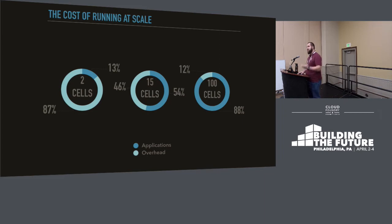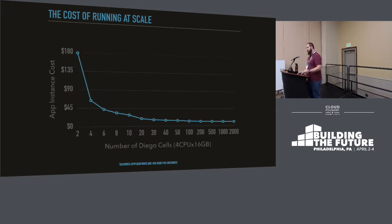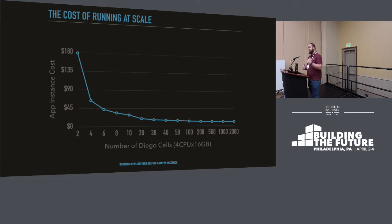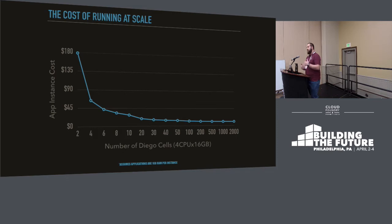So what does that look like in terms of cost per app — the compute cost? How much does it cost for that CPU, for that one gig of RAM? When you're at two cells, each app is at about $180 just in compute costs alone. But once you go from two to four, it doesn't drop by half — it drops by more than half. You get down to like $45, and the theoretical max is right about $11 in compute cost, because that's how much it costs to run a one-gig app on that instance. You've almost gotten all the way down to just the bare costs of the resources.